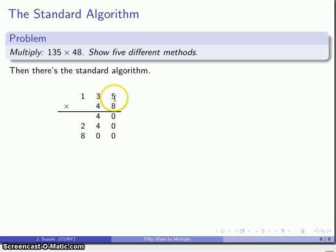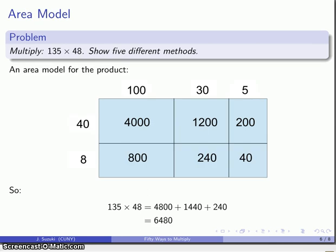40 times 5, 200. 40 times 30, 1,200. 40 times 100 is 4000. And it's worth comparing these products here. 240, 800, 200, and so on. It's worth comparing those products to the numbers you get in the area model. Notice that these partial products here are exactly the same numbers that we got in the standard algorithm.